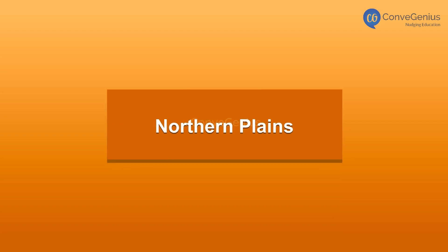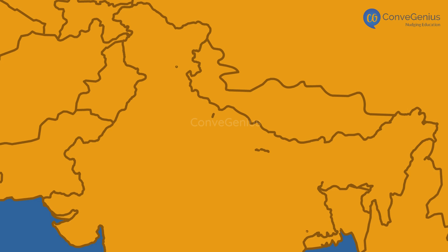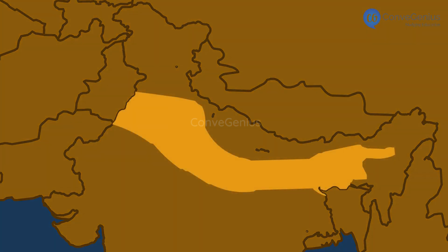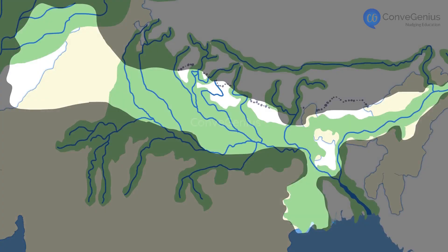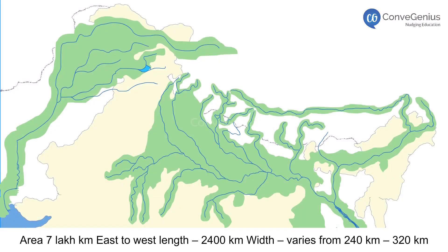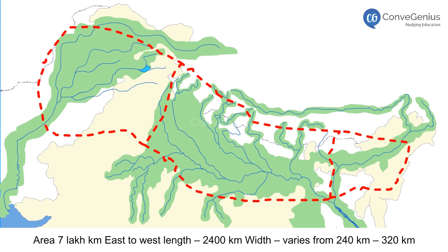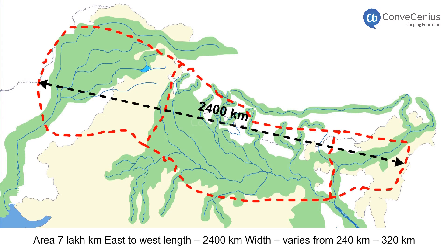Northern Plains. The Northern Plains, located to the south of the Himalayas, are formed of sedimentary deposits of alluvium brought down by rivers Ganga, Satlaj, Brahmaputra and their tributaries. It covers an area of 7 lakh square kilometers. Its east to west length is 2,400 kilometers, and the width varies from 240 kilometers to 320 kilometers.